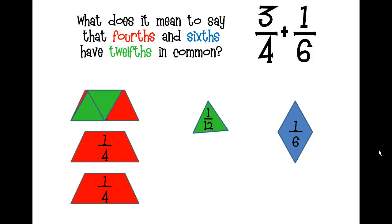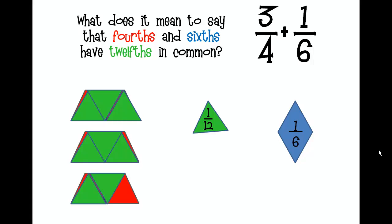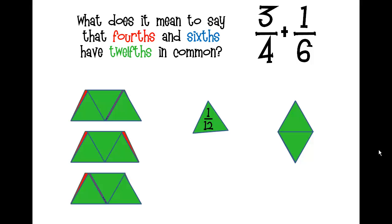Do you see how the green triangles very nicely cover up the red trapezoids? It also works with the blue diamonds. So we say that twelfths is a common denominator.